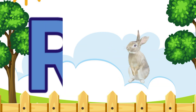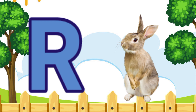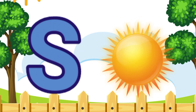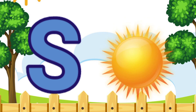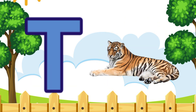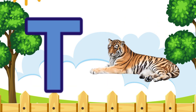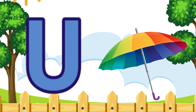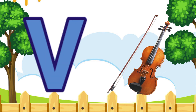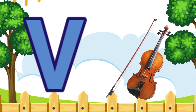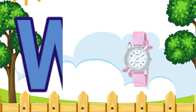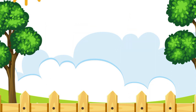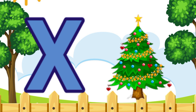R for rabbit, S for sun, T for tiger, U for umbrella, V for violin, W for watch, X...